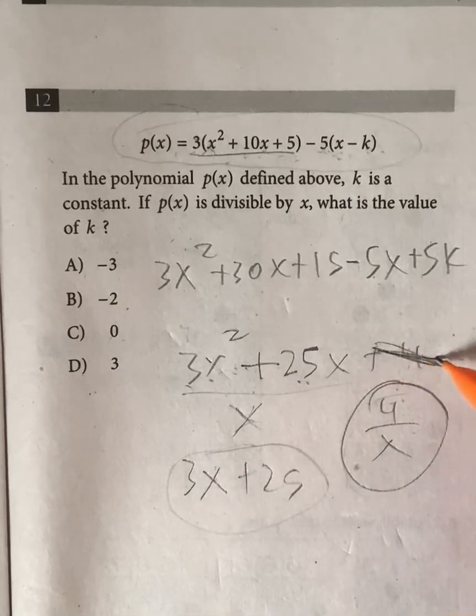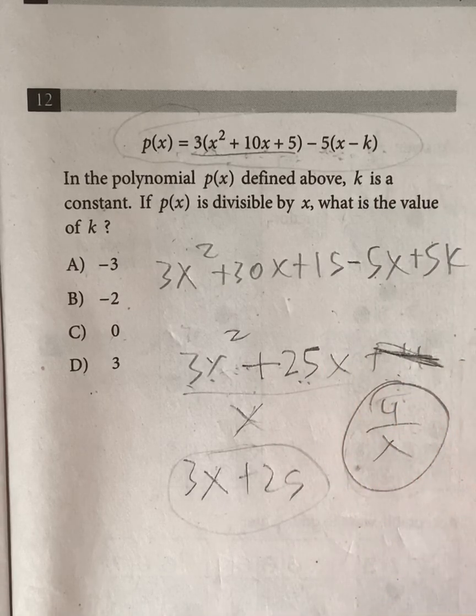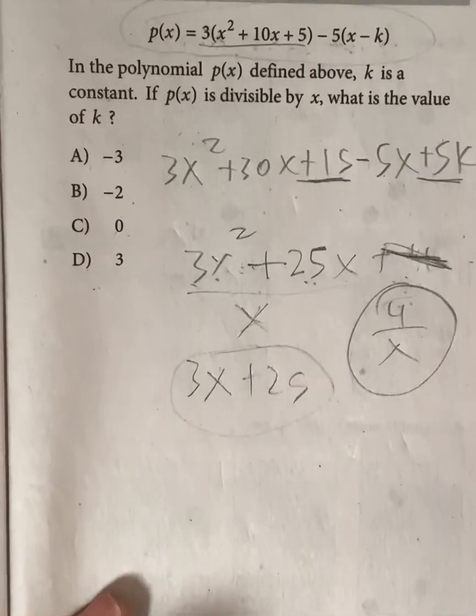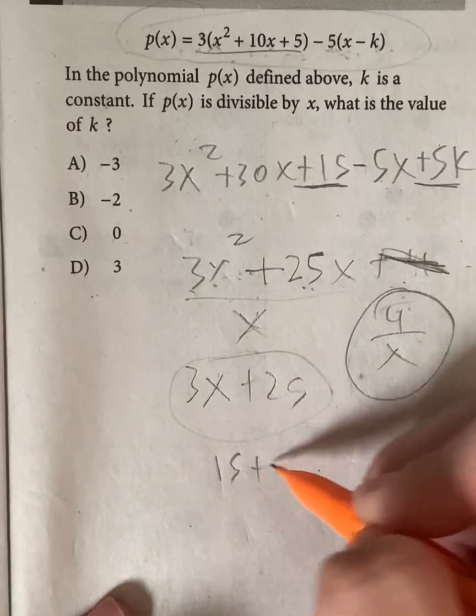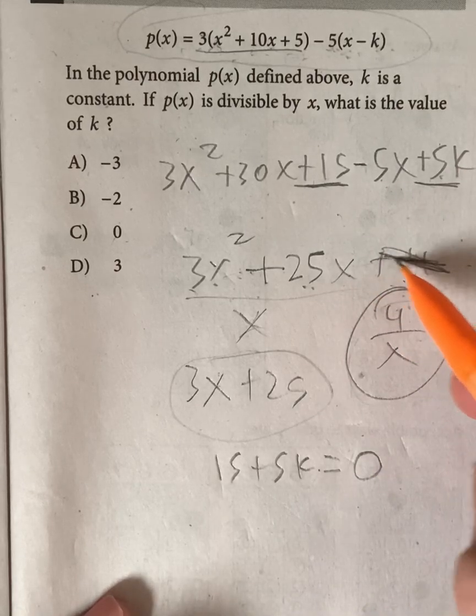So it means we can't have a constant anymore. So it means for the constant part of this equation, it must equal to 0. So the constants are 15 and 5k. So that must mean that 15 plus 5k has to equal to 0. They combine, giving us no constant.